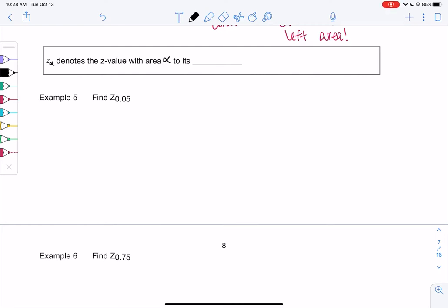Section 6-2, example 5. We're going to add one new definition in terms of variables. When we have z with a subscript of alpha, this would be where area alpha is to the right. So when we have z subscript 0.05, it means 0.05 is the area to the right. It's always the right side.